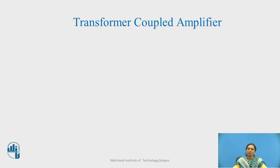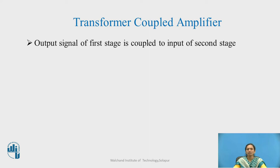Why is there a need for a transformer coupled amplifier? In previous sessions we have seen why there is a need for coupling — to improve the gain of the amplifier. While doing so we employ various coupling schemes. For the first one we saw the RC coupled amplifier, in which there is loss of signal. To overcome that, we use the transformer coupled amplifier, which allows coupling with impedance matching. That is the key advantage of this amplifier.